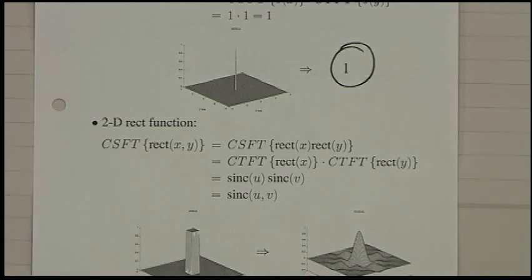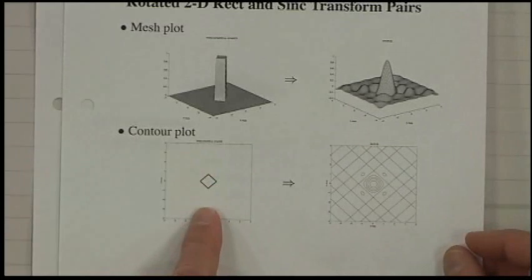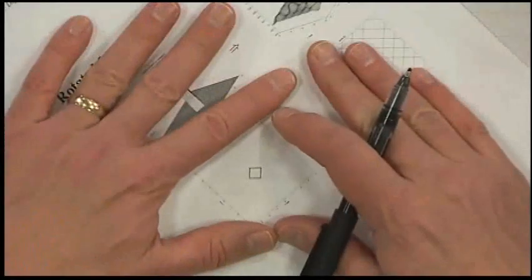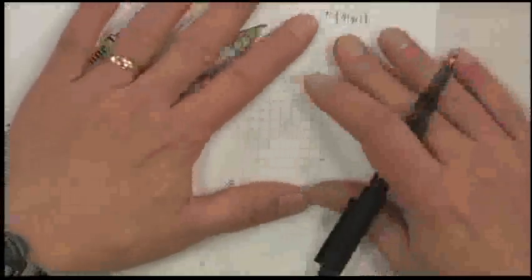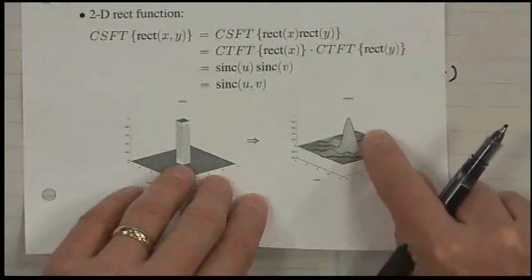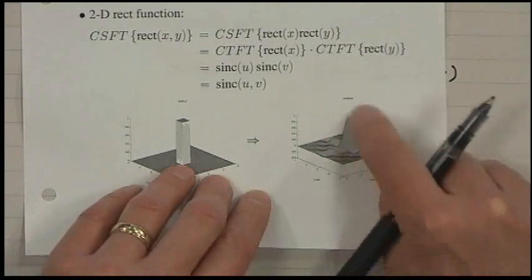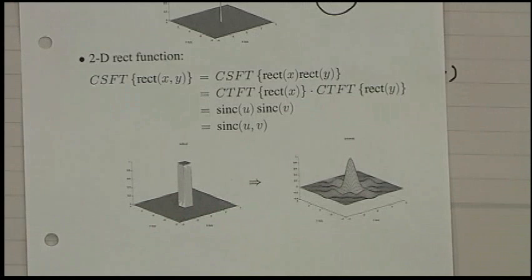The rect function is not rotationally invariant. If you plot it, it looks like a square. Its Fourier transform, the sinc, is also not rotationally invariant — you can see it varies as you go around circles of constant radius from the origin. The class has reached maximum capacity with 42 people in the room. Because of fire safety laws, we can't add additional seats, but people on campus can still take the course by watching the lectures, and I'll administer exams in a second room with the TA.